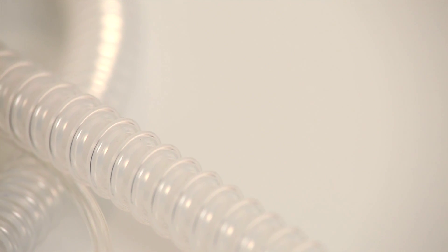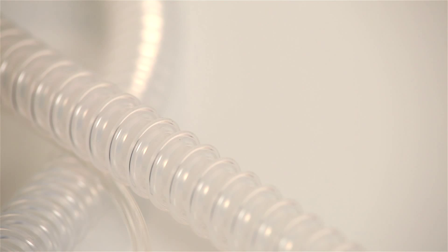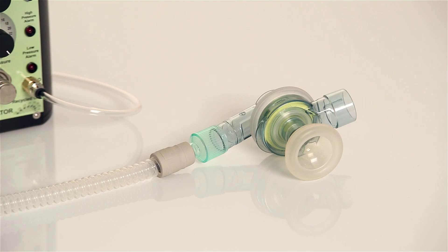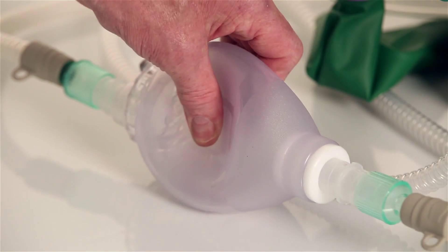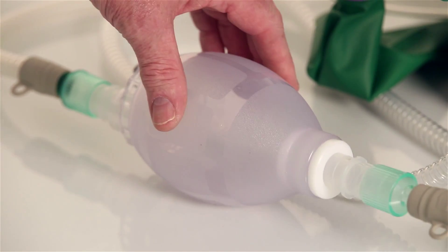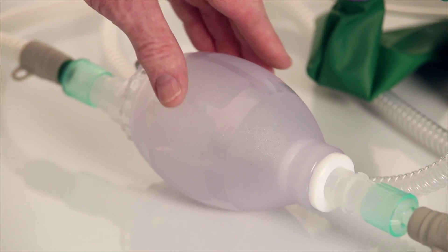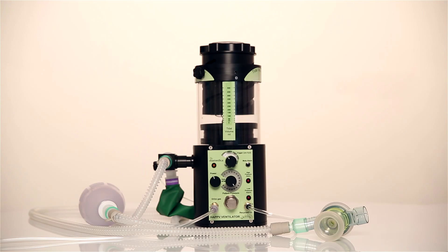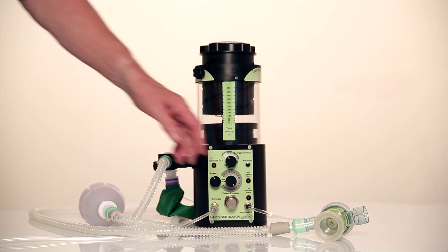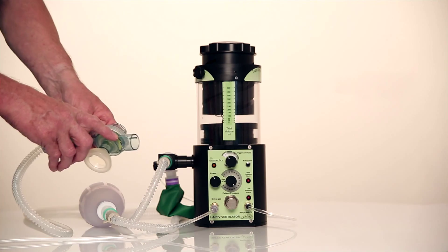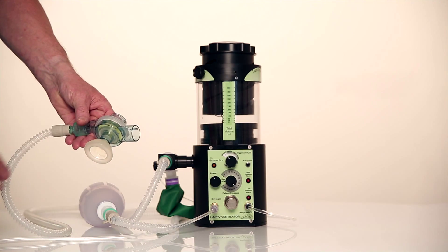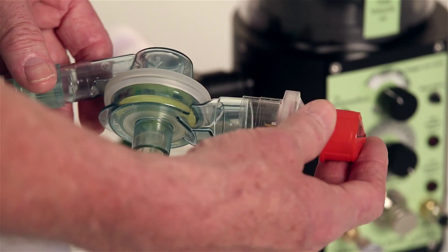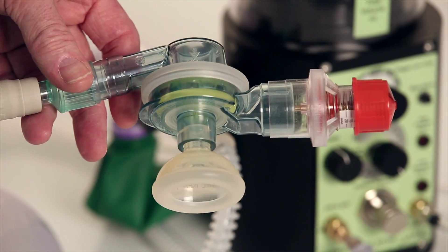The circuit provided is autoclavable silicon tubing with a patient valve at the distal end and a self-inflating bag in the middle to allow manual or assisted ventilation. Expired gases leave the system through the 30mm port on the patient valve and PEEP or scavenging can be applied at this point.